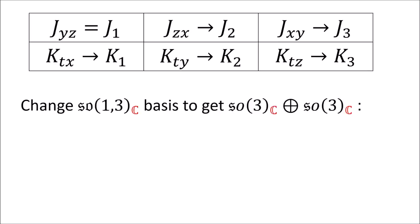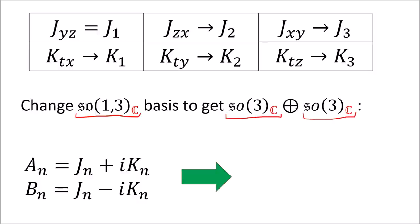And using a special change of basis we can break up the complexified Lorentz Lie algebra into two copies of the complexified SO(3) Lie algebra.